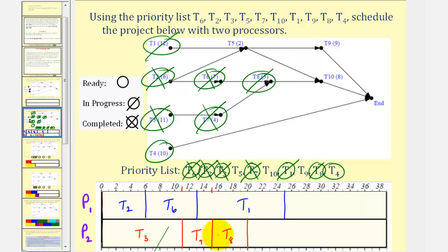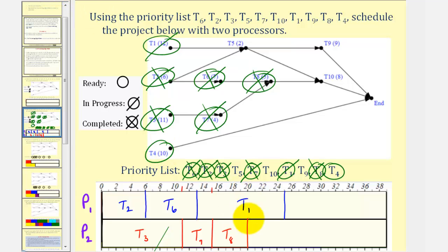After twenty hours, task eight is complete — we mark it as complete. Notice task ten is not ready yet; it's waiting for task five. The only ready task is task four, which will now be assigned to processor two. Task four takes ten hours, so twenty plus ten is thirty. Task four is now in progress.